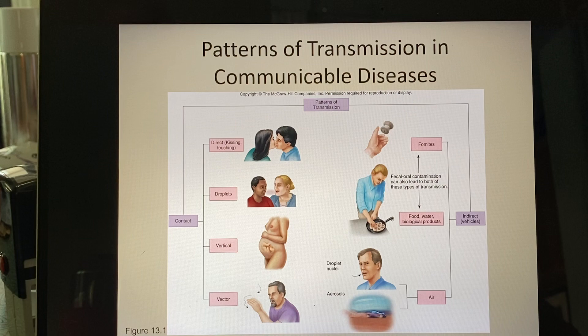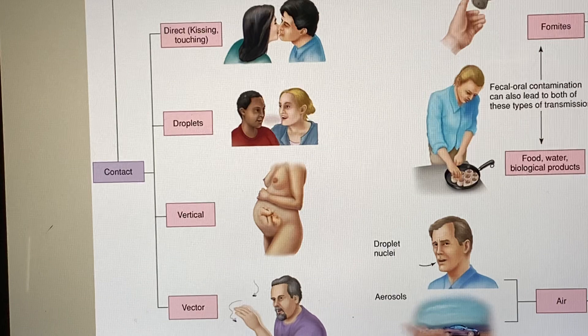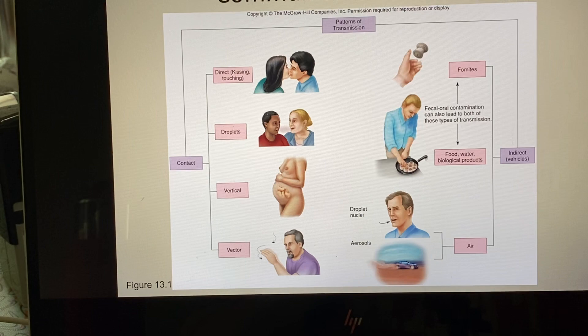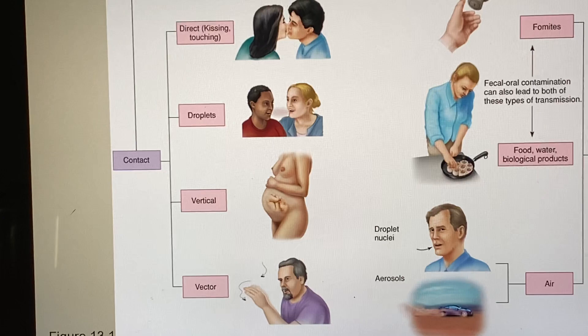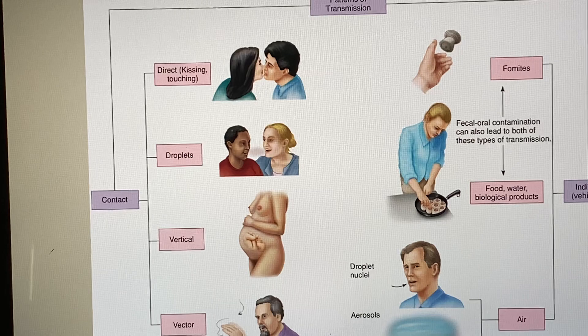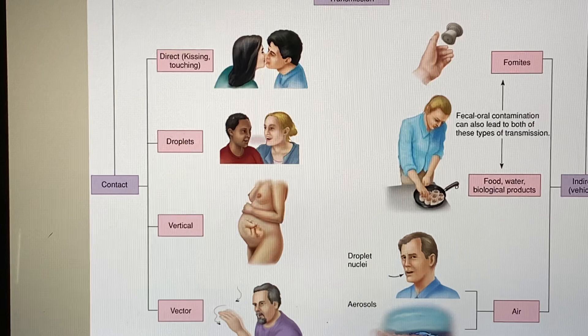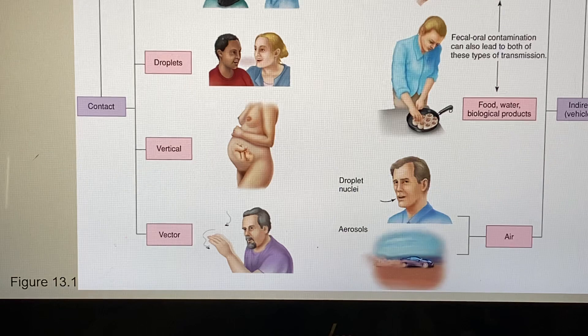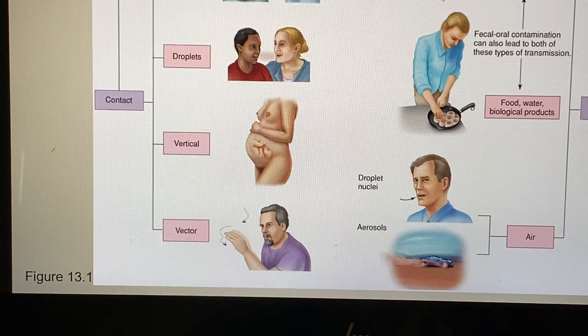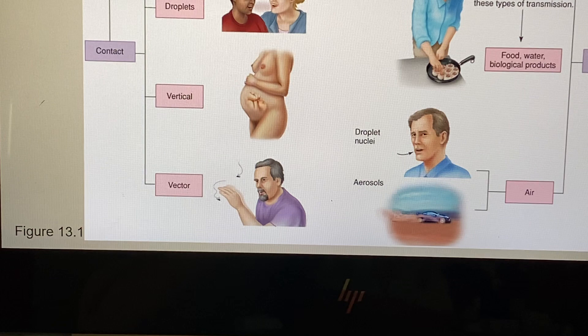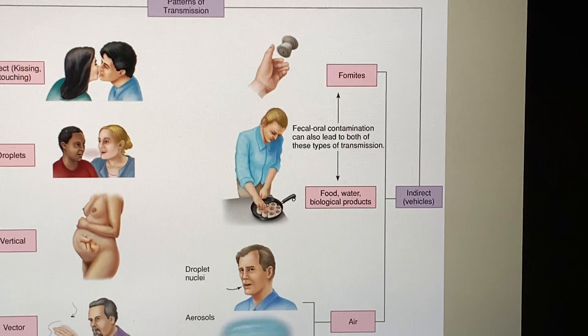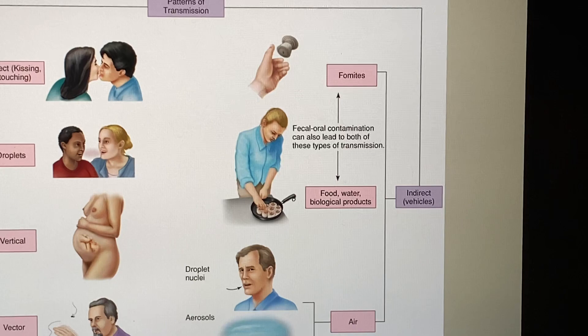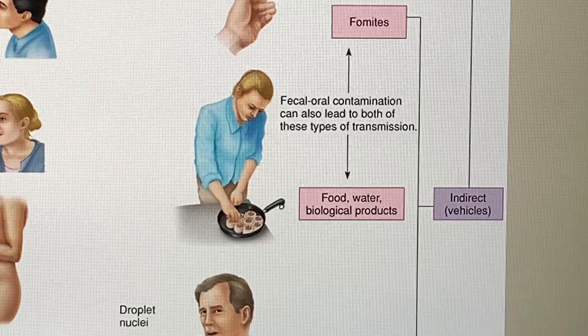Here are some examples — there's also a worksheet that goes with this. Different types of patterns of transmission: direct contact, such as kissing someone; droplets from people close to each other talking or coughing — that's why we're supposed to wear a face mask for COVID-19; vertical transmission, which is specifically from mom to baby while the baby is in utero; vectors, such as mosquitoes for biological vectors or house flies for mechanical vectors. There's also fomites, which we'll get to, and the fecal-oral route.